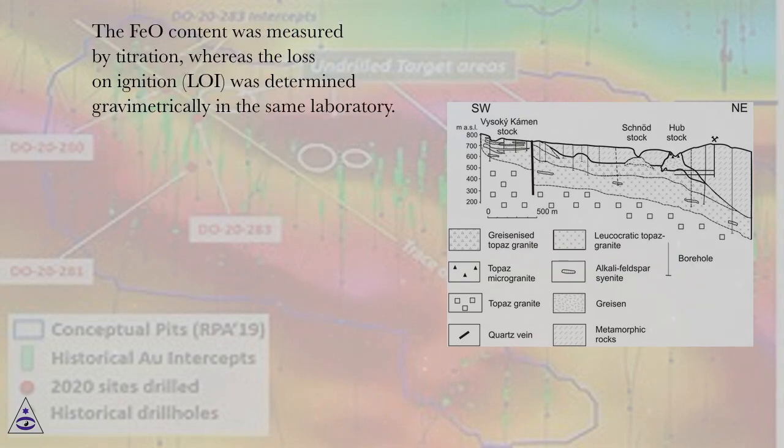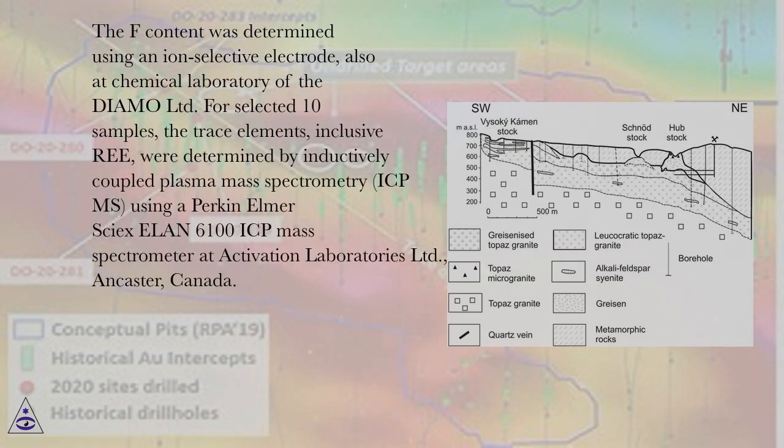The FeO content was measured by titration, whereas the loss on ignition (LOI) was determined gravimetrically in the same laboratory. The F content was determined using an ion-selective electrode, also at Chemical Laboratory of the DIAMO Limited for selected 10 samples.